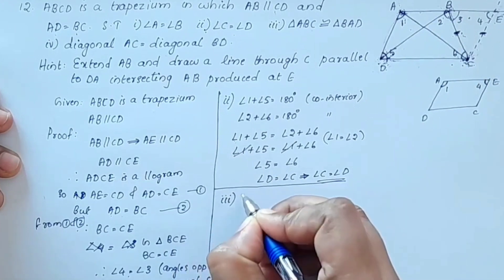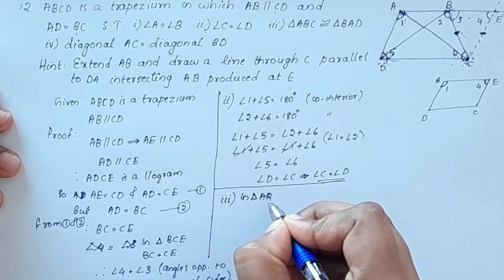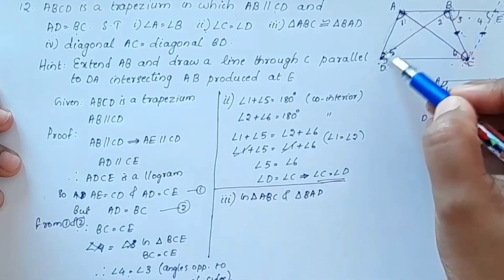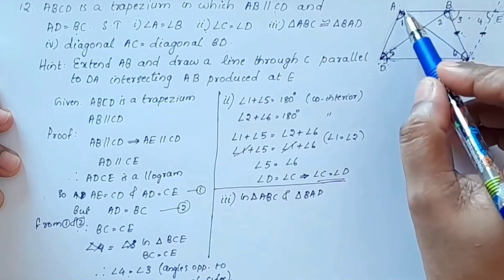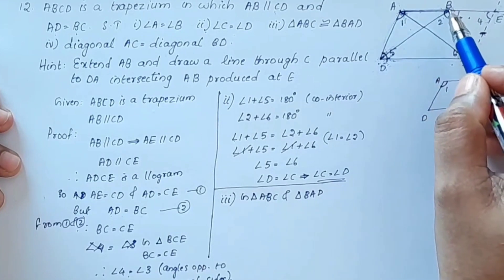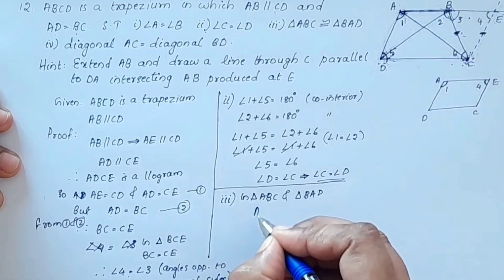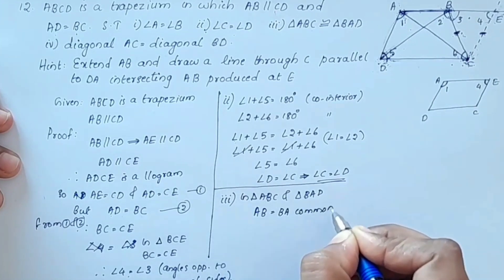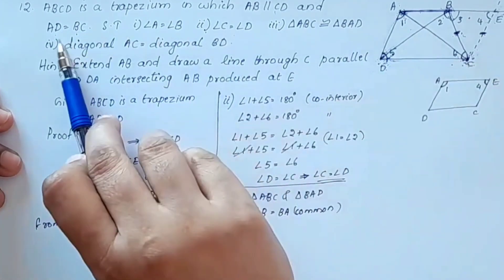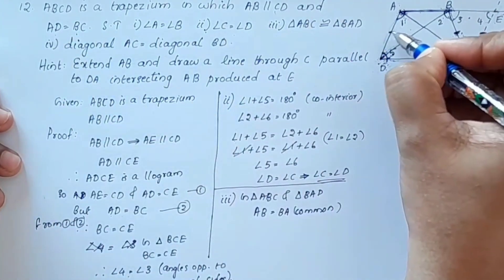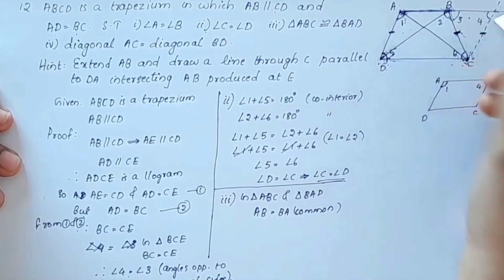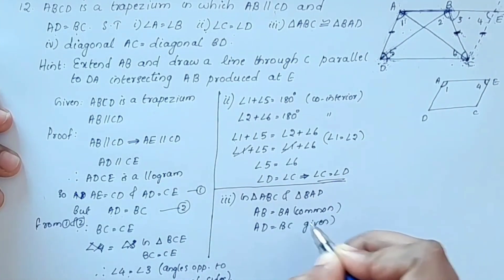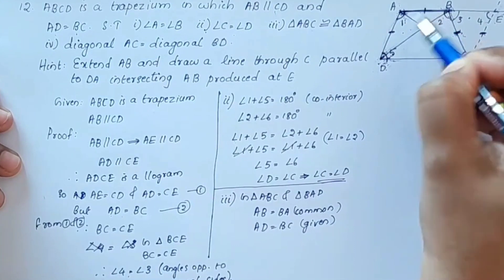In triangle ABC and triangle BAD: AB equals BA (common side). AD equals BC, which we proved earlier. Angle A equals angle B, proved in part one. Therefore triangle ABC is congruent to triangle BAD.